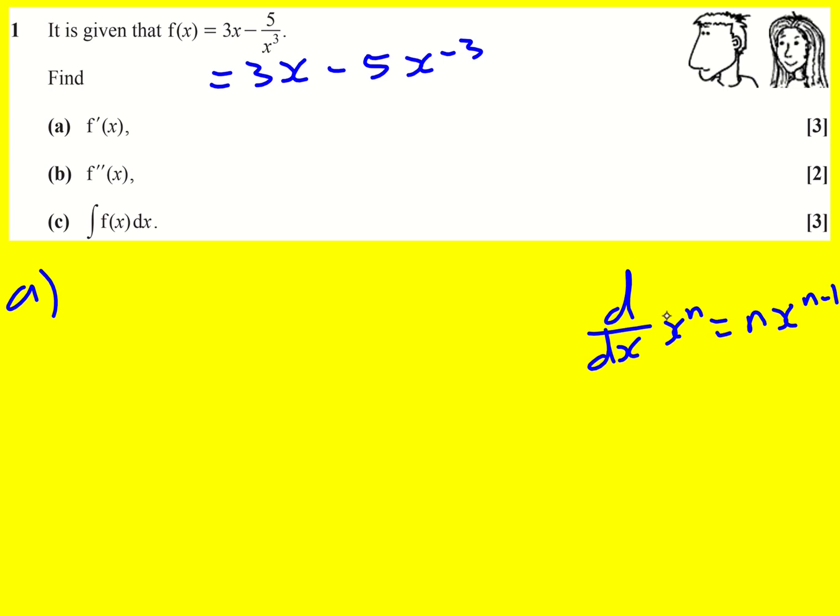Here we're just going to use this rule. F dash x: well, the 3x actually goes to 3. It's a special case. It does still follow this rule, but it's best to remember that if you have a constant times an x, it just becomes a constant.